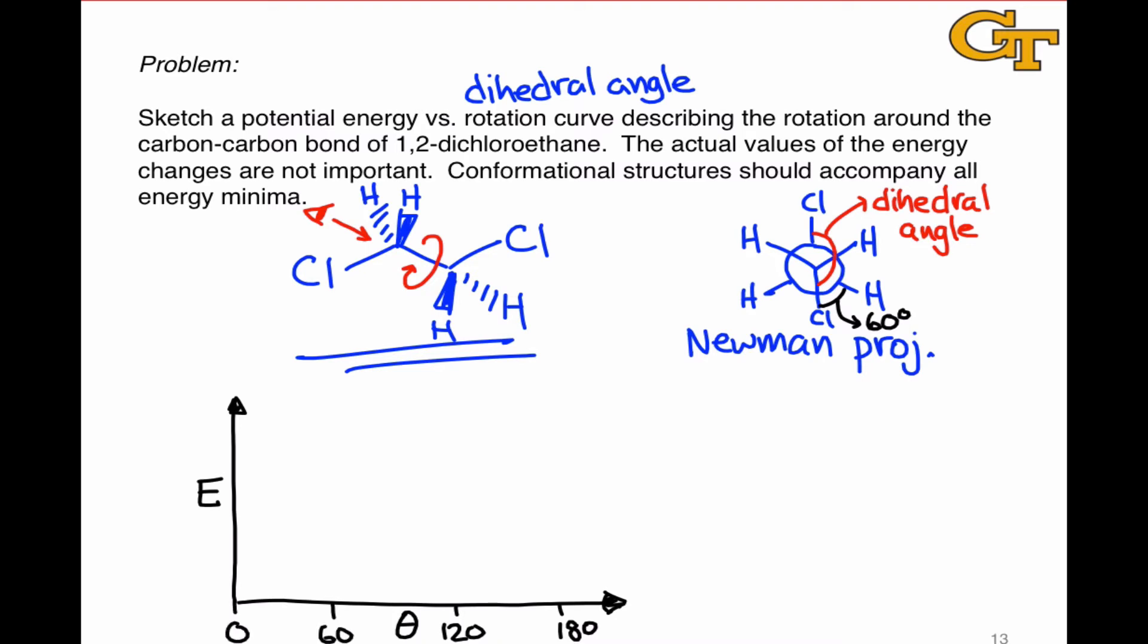Let's start by simply laying down the structure we've got here at 180 degrees at a particular energy value. What we're going to do is consider the other structures and their relative energies based on interactions between the bonds in the front and the bonds in the back.